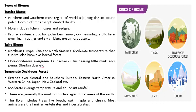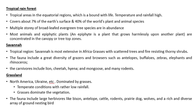Next is the temperate deciduous forest biome, which extends over central and southern Europe, eastern North America, western China, Japan, and New Zealand. The average temperatures are moderate with abundant rainfall, making these the most productive agricultural areas of the earth. Flora includes trees like beech, oak, maple, and cherry. Most animals are familiar vertebrates and invertebrates.